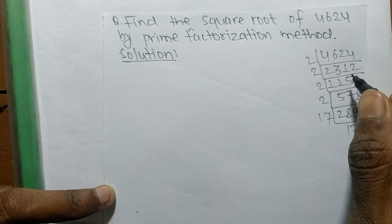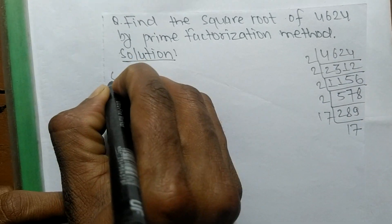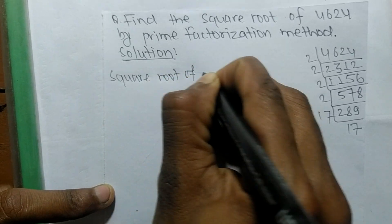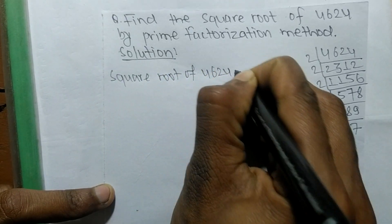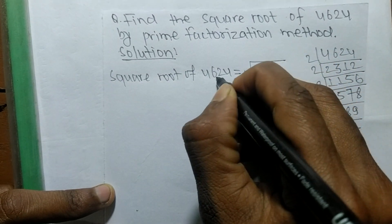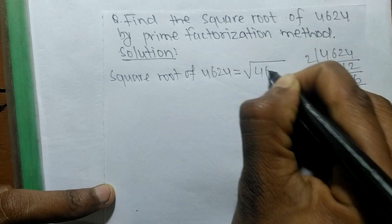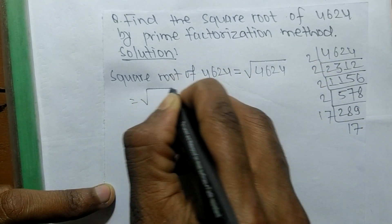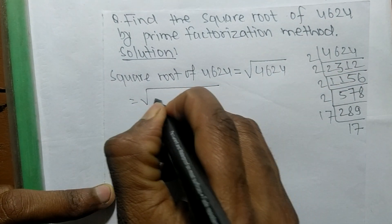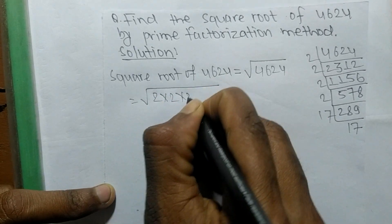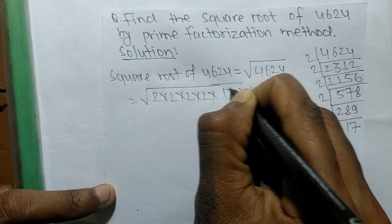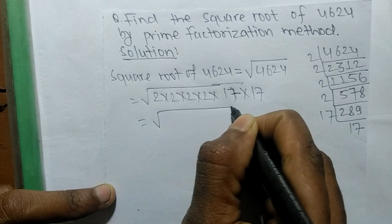After finding the prime factors, now we find the square root. The square root of 4624 is written using the square root sign. So 4624 equals 2 into 2 into 2 into 2 into 17 into 17. Now we have to write the multiples of these prime factors.